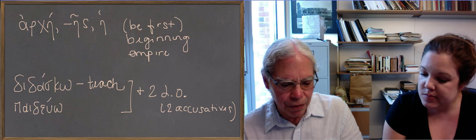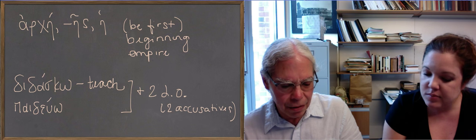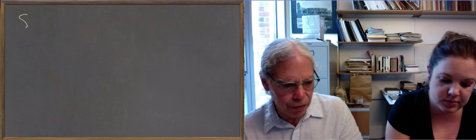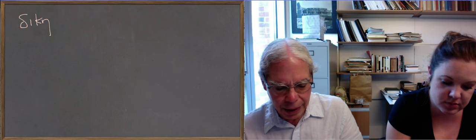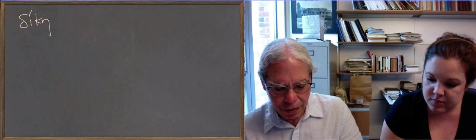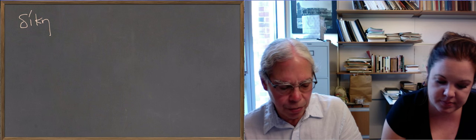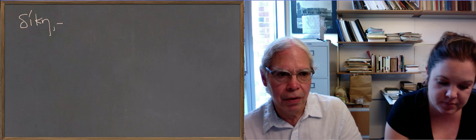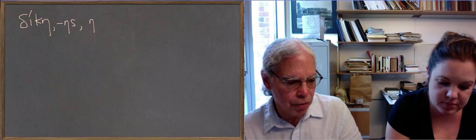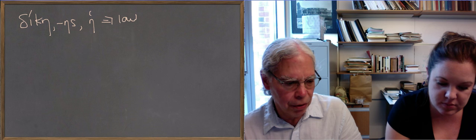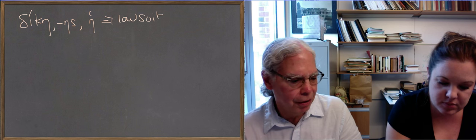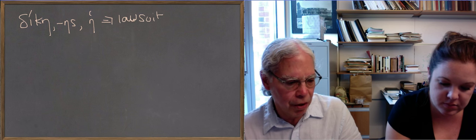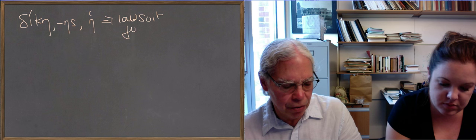The next word is a big concept for Greeks, dike. Dikes is the genitive, so it's the first declension feminine noun, and it means justice. But it can also be something concrete that is, as the book says, a lawsuit. A judicial procedure, in other words, as well as the concept of justice, the abstract concept of justice.